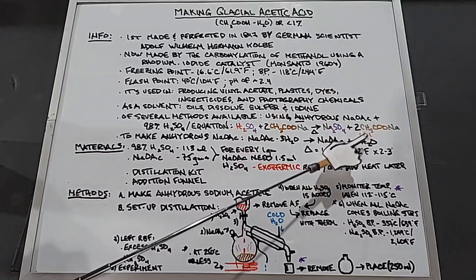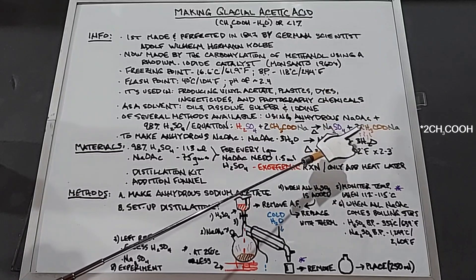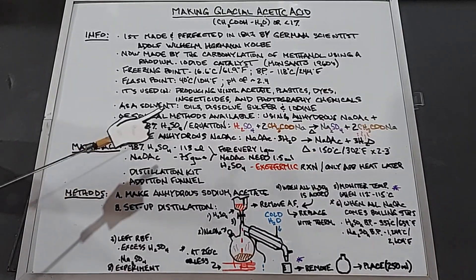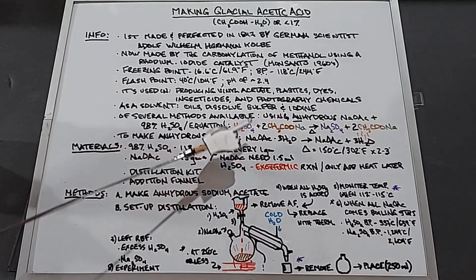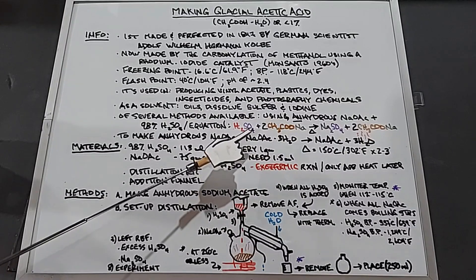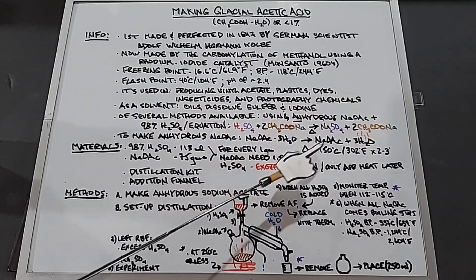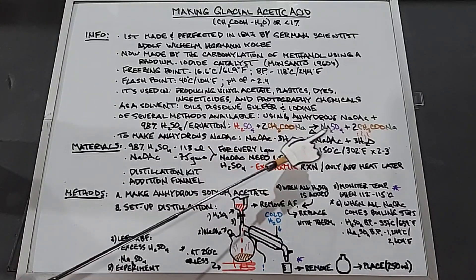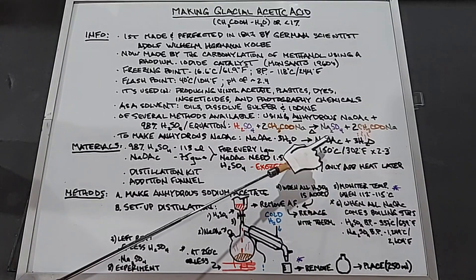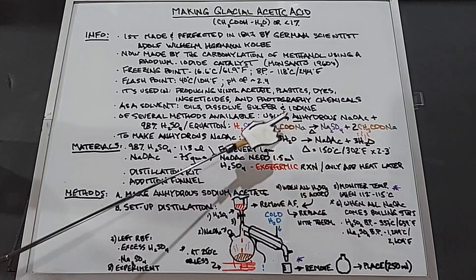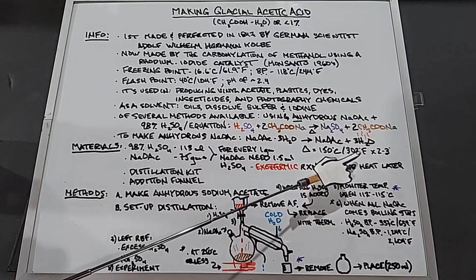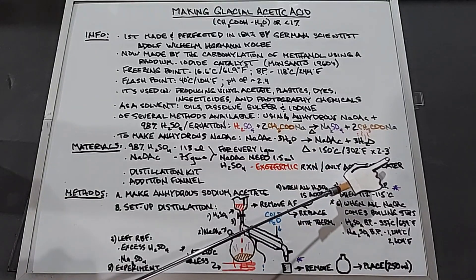To make it properly we have to have anhydrous sodium acetate. The equation is simple: sodium acetate trihydrate with heat yields anhydrous sodium acetate and water, which evaporates. The heat applied is around 150°C (302°F) for two to three hours, which is easily done in most conventional ovens.